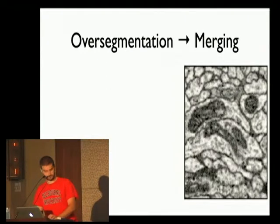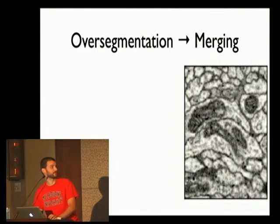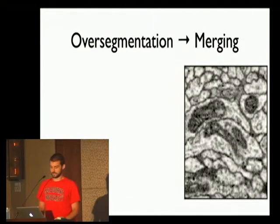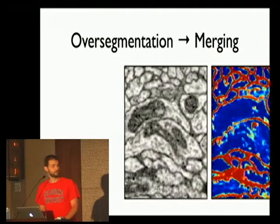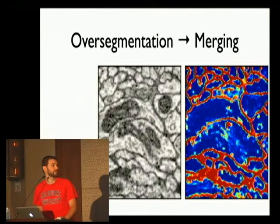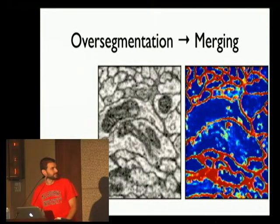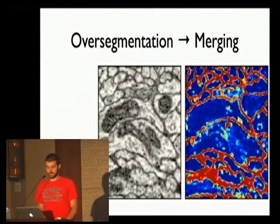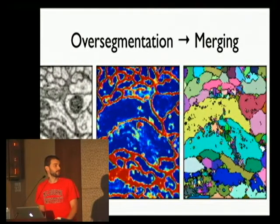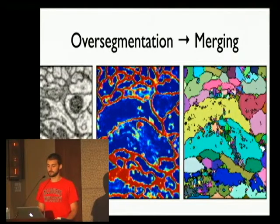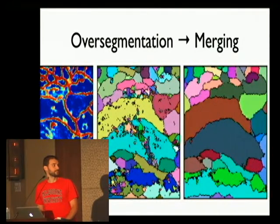You can see here it might be a problem to segment because locally you don't have much information — this boundary looks very much like the stuff inside a cell. From this image, we train a classifier that gives us the probability of being a boundary. You can see the classifier had trouble in some regions. From this, we do an over-segmentation using the output from the watershed algorithm. You can see there are no merges, but there's also a lot of noise, and the goal is to merge all of that into a final segmentation.